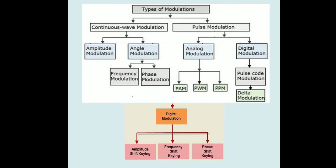In analog modulation there are amplitude modulation, angle modulation, frequency modulation, and phase modulation. In pulse modulation, it divides into analog pulse and digital pulse. Analog pulse is further divided into pulse amplitude, pulse width, and pulse position modulation. Digital modulation is further divided into three parts: amplitude shift keying, frequency shift keying, and phase shift keying. The combination of amplitude shift keying and phase shift keying is QAM — Quadrature Amplitude Modulation.